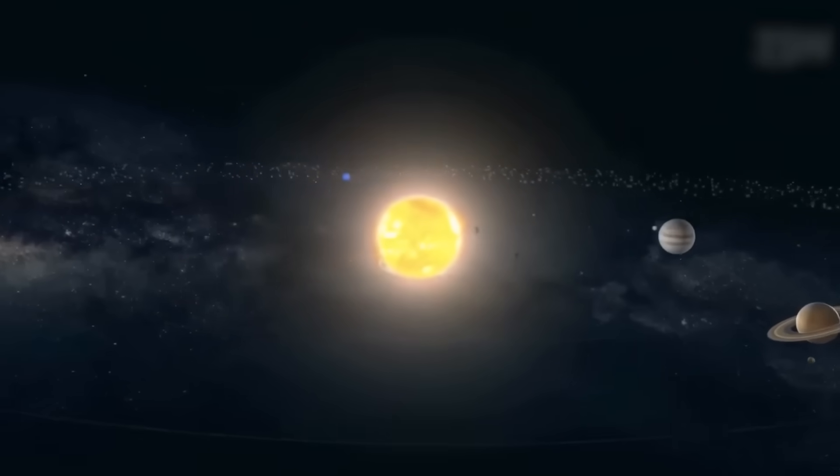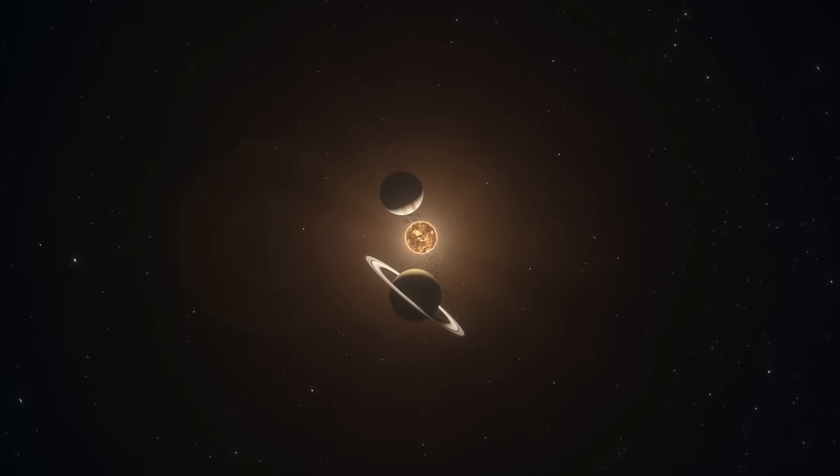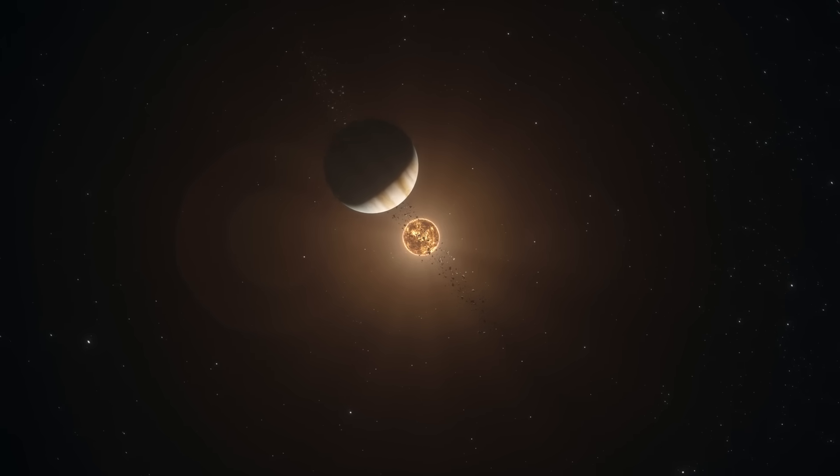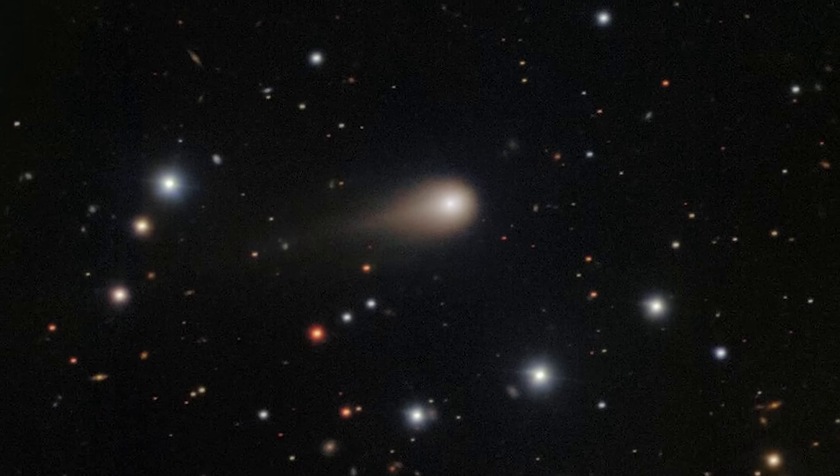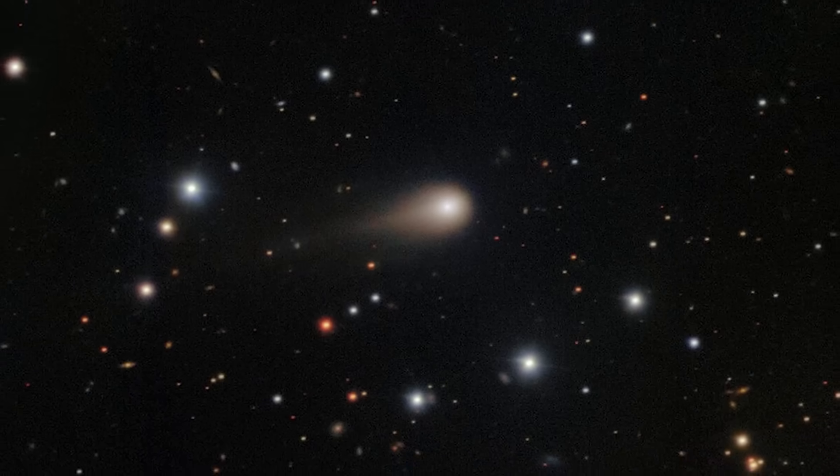3I Atlas, the third interstellar object ever discovered, was discovered on July 1st by the NASA-funded Atlas Survey. This celestial body is not just passing through, it's actively fighting against the forces of the sun. Its tail is generating a mysterious propulsion system, an unbelievable admission that has sent shockwaves through the astronomical community.